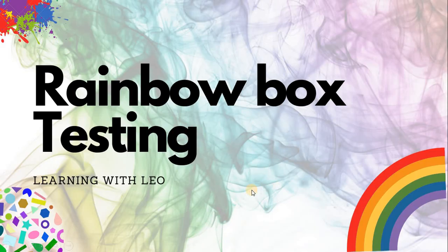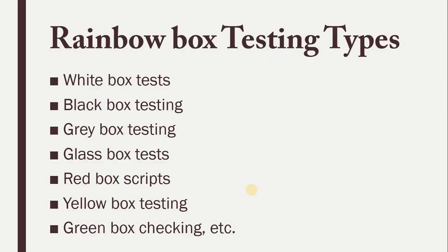Let's see what the different types available in rainbow box testing are. White box testing is useful for the development team to perform unit testing of the development code. Black box testing we often call functional testing, and it happens at different levels of testing such as system integration testing and integration testing, where we validate the functionality of the application.